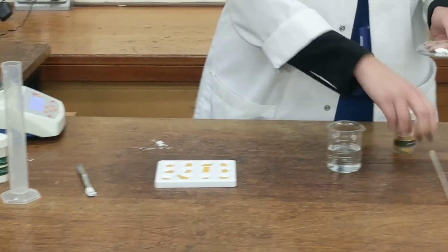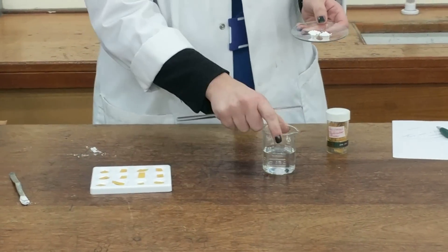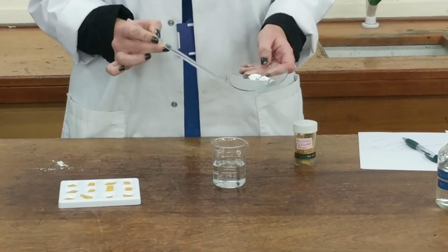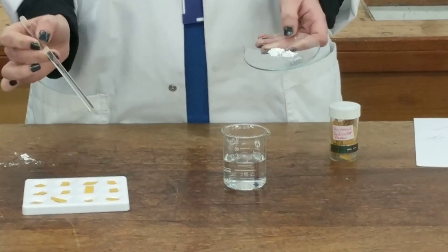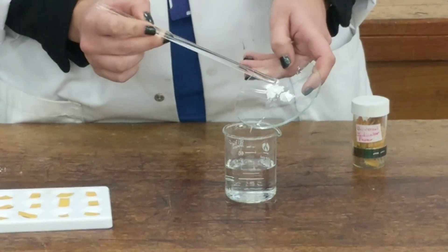So we're going to add the first slot of calcium hydroxide, 0.3 grams, stir and put a little bit of it onto the universal indicator paper.